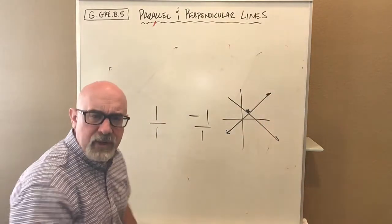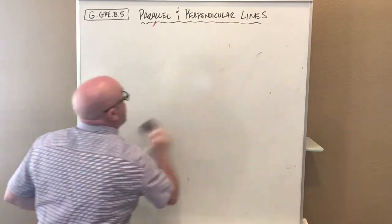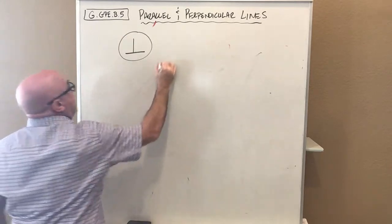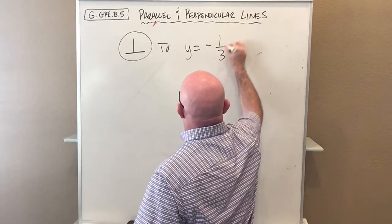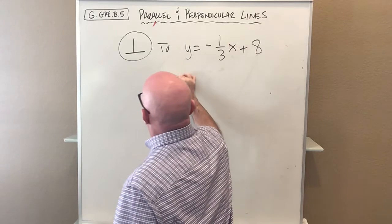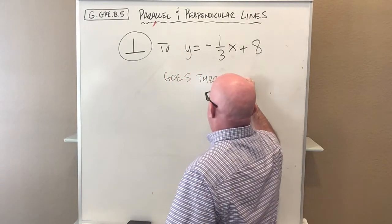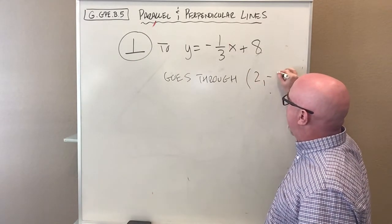In the situation of an equation, we're going to say: find something perpendicular (this is our perpendicular symbol) to y=-1/3x+8 that goes through the point (2,-4).